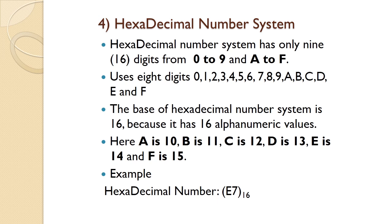Hexadecimal number system has digits from 0 to 9 and A to F. The base of hexadecimal number system is 16 because it has 16 alphanumeric values. Alphanumeric value means it is a combination of alphabets and numbers. Here, A is 10, B is 11, C is 12, D is 13, E is 14, and F is 15. An example is E7.